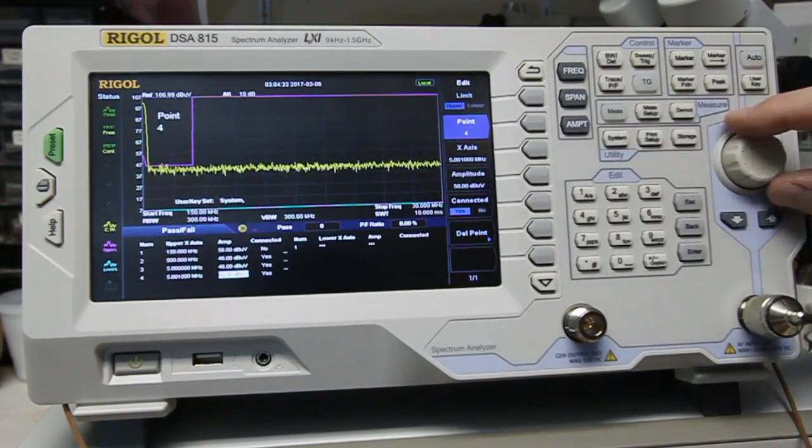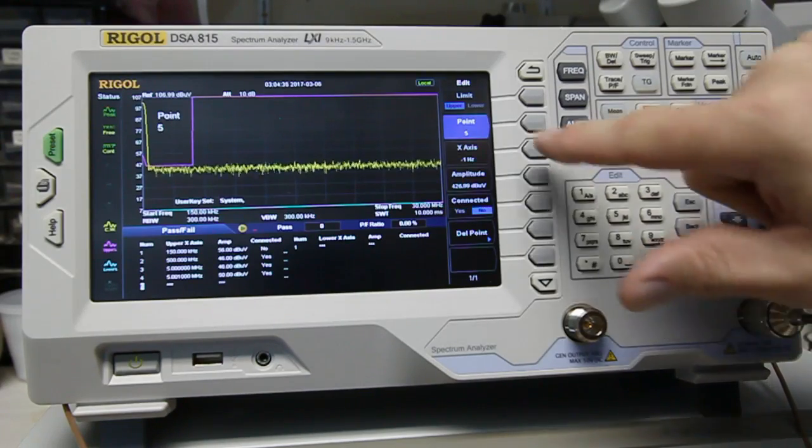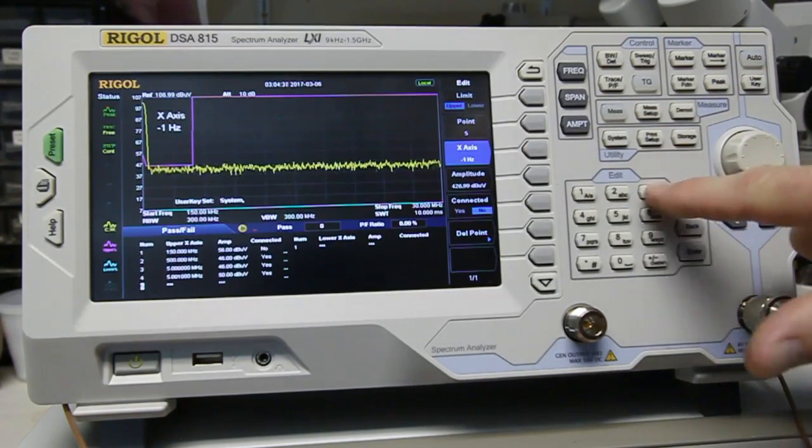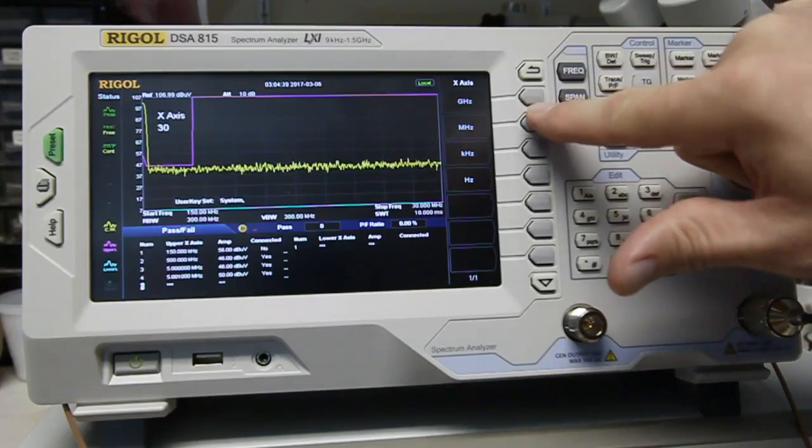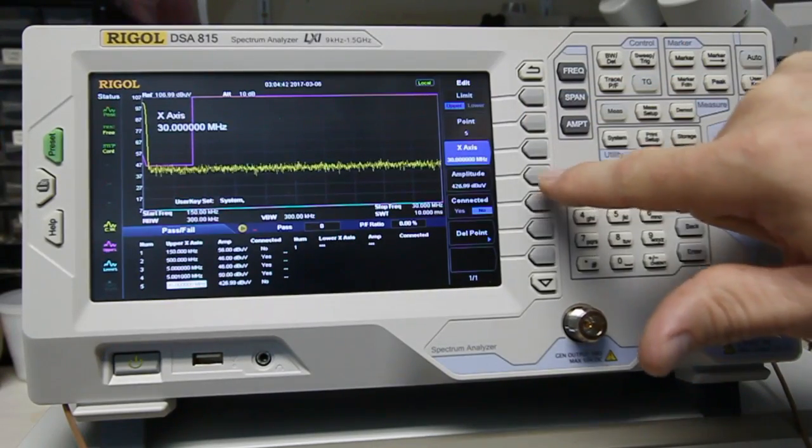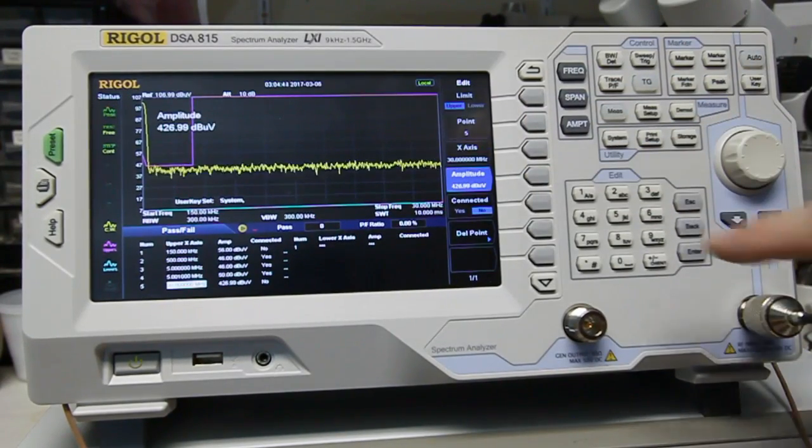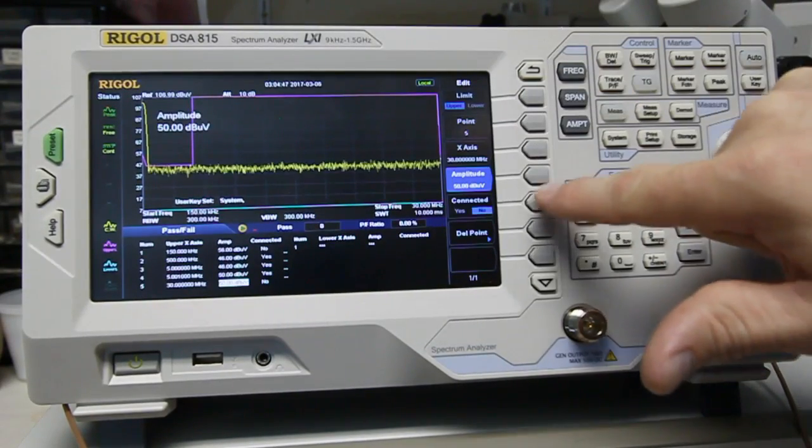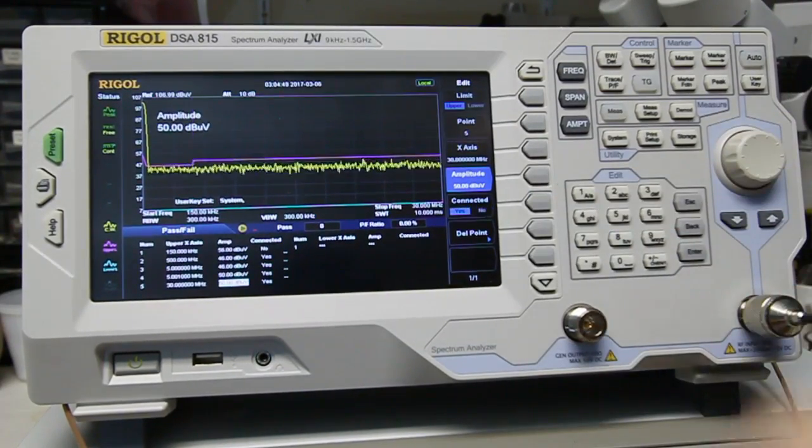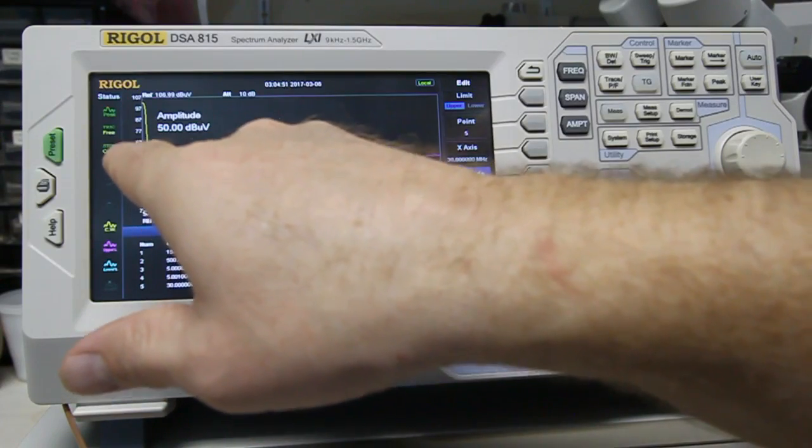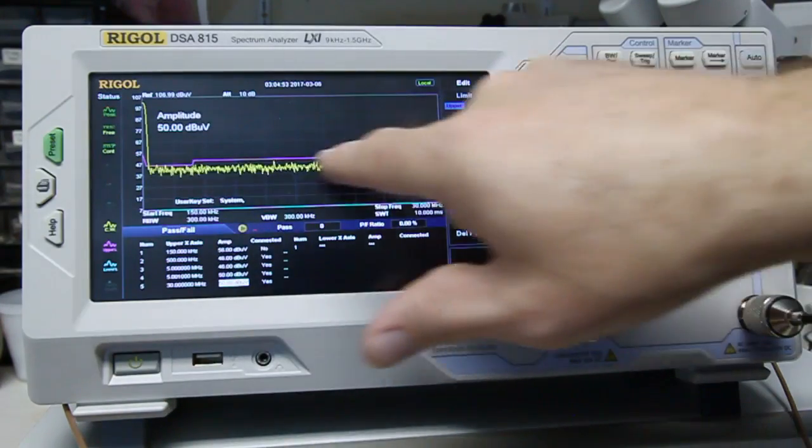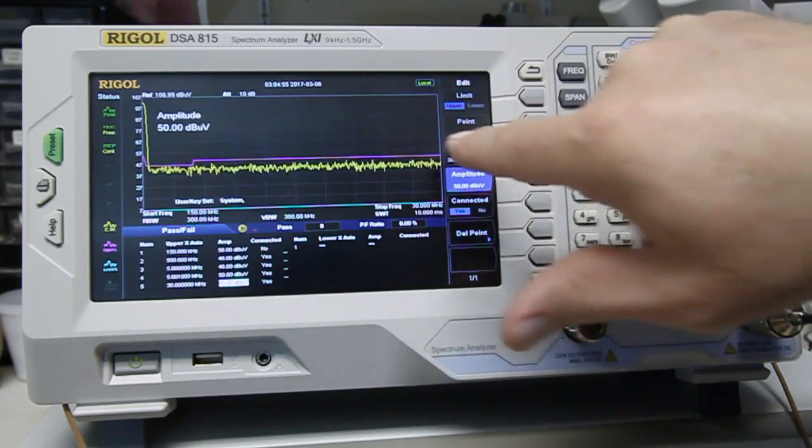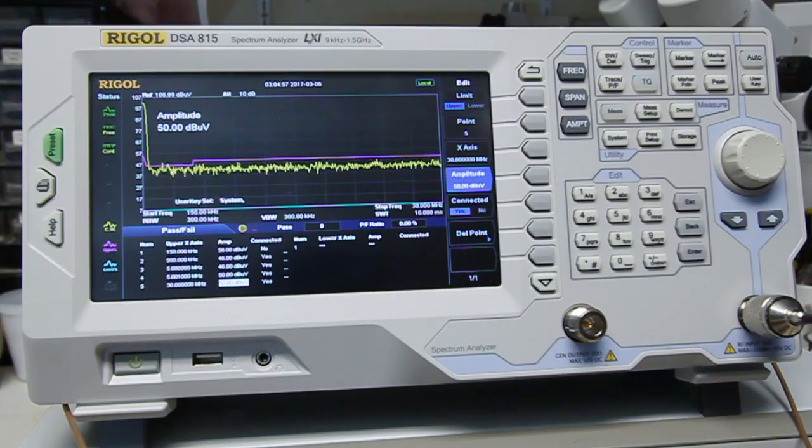Our next point is the 30 megahertz, the ending point of this measurement. And the amplitude there should be 50 dB. And we want it connected, yes. So now we see there's our limit lines.